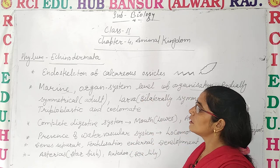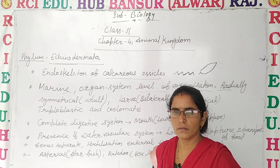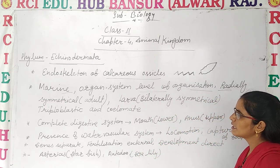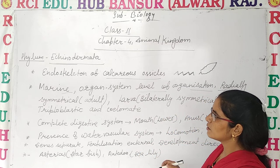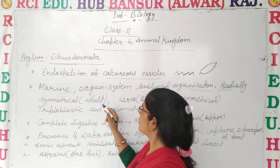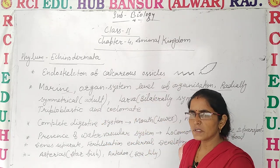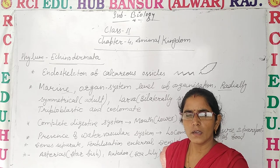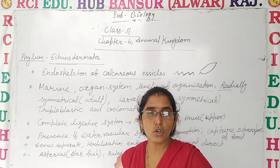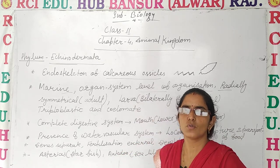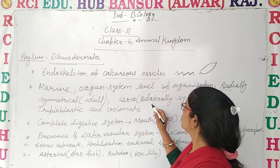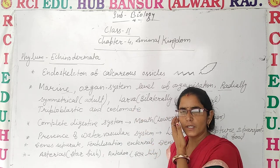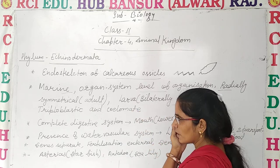They have both radial and bilateral symmetry. Adults are radially symmetrical — they cannot be divided into two equal halves through any plane. Whereas the larvae are bilaterally symmetrical, meaning they can be easily divided into two equal halves.